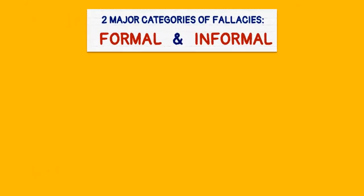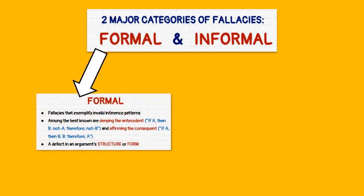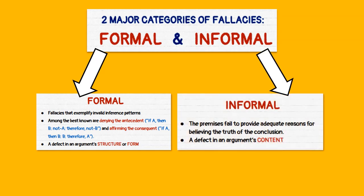The two major categories of fallacies are the formal and the informal fallacies. In the formal category, a defect in an argument's structure or form can be seen — it exemplifies invalid inference patterns. While in the informal category, a defect in an argument's content can be seen, and the premises fail to provide adequate reasons for believing the truth of the conclusion.